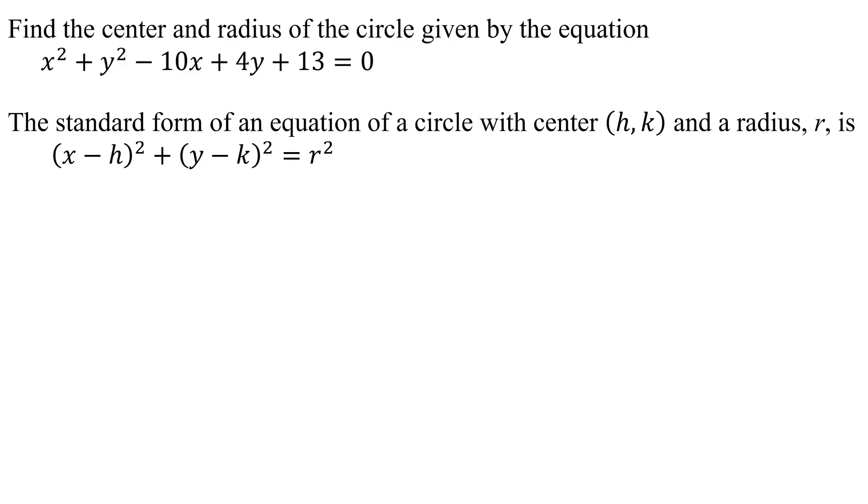Quickly reviewing, the standard form of an equation of a circle with center at the ordered pair (h, k) and radius r is given by (x - h)² + (y - k)² = r². Once my equation is in standard form, it's easy to find the coordinates of the center h and k and the radius r.